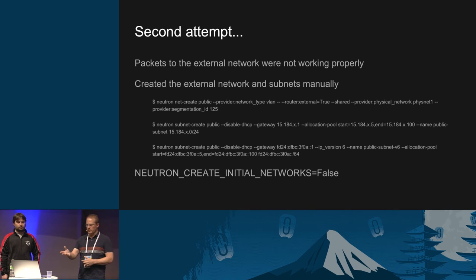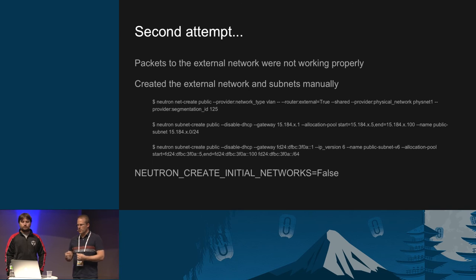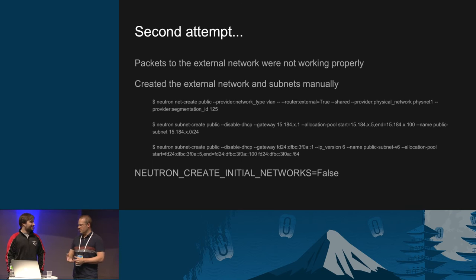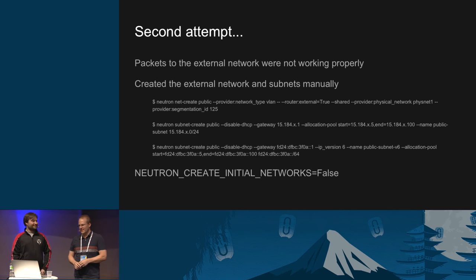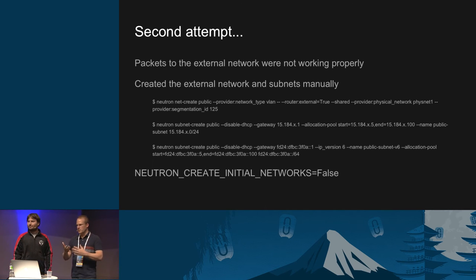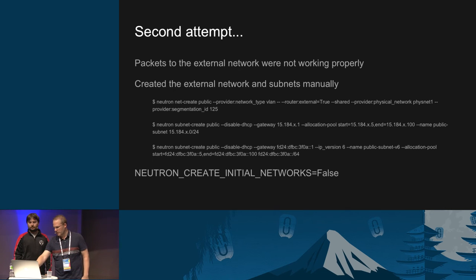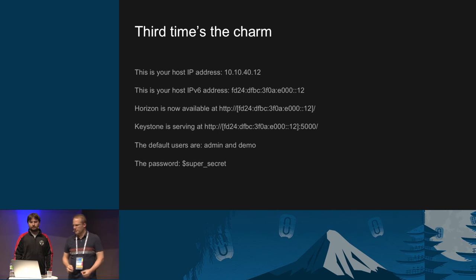We finally traced the problem to the fact that when the default network was being created by DevStack, it wasn't adding our VLAN ID to it, so none of the packets were being tagged properly. So we also had to manually handle that — running these three commands to create the network and then create our two subnets, one for v4 and one for v6. This is actually pretty easy in DevStack now that I know the correct setting. There's always a knob for whatever you're looking for in DevStack. There's a 'create initial networks' setting — if you don't want it to create your subnets and networks where they might not be correct, you can set it to false in your local.conf.